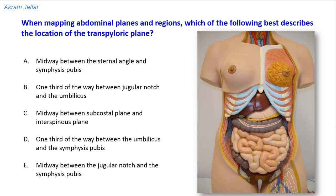Otherwise, the pylorus of the stomach might lie in any other plane, depending on the body build of the patient and the amount of distensibility of the stomach. That was the origin of the name of the transpyloric plane — it passes through the pylorus of the stomach when the stomach is empty and the patient is in the supine position.